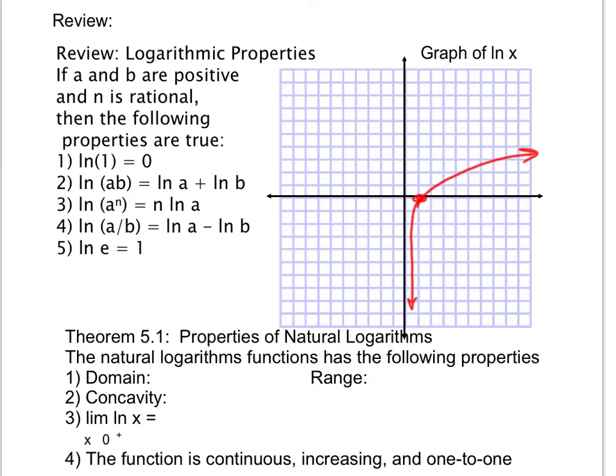So remember we talked about how if we have ln of 1, we get 0. Mainly we also talked about how if I have ln of ab, it's the same thing as saying ln of a plus ln of b. If I have an exponent here, I can bring that out into the front of my natural logarithm, giving me n ln of a.